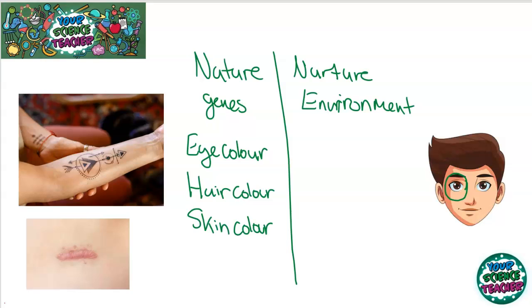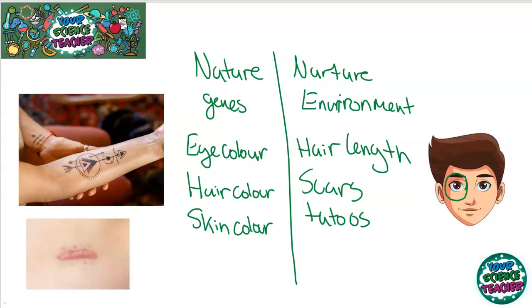However, there are some characteristics looking at him that are not from his genes. Look at his hair length — he's chosen to spike his hair up in that way. Scars that we gain throughout our lifetimes are controlled by our environment, as well as if we choose to have tattoos. There are a couple which hit the middle ground, and they are height and weight. They are controlled by both our genes and our environment. If we eat well, we are likely to have a bigger weight and a taller height, but some of this is controlled by our genes and our metabolism as well.